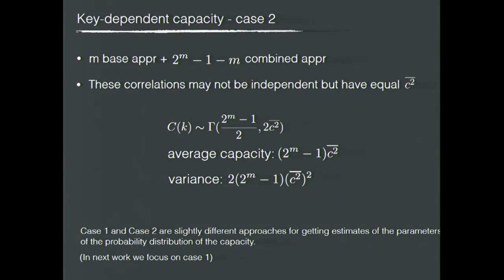In Case 2, not only the base approximations but also the remaining combined approximations are taken into consideration, and all of them have a non-negligible contribution to the capacity. In this case, those correlations are not independent anymore, but we can still prove that they have equal expected linear potential. With this factor, the capacity can be further derived into a specific form with a corresponding average value and variance.